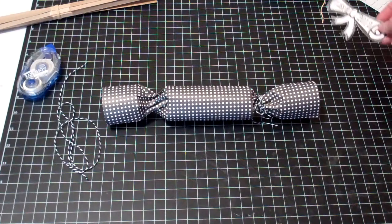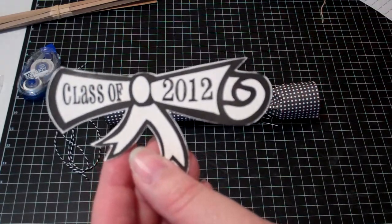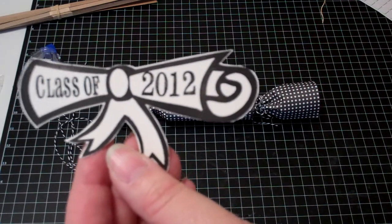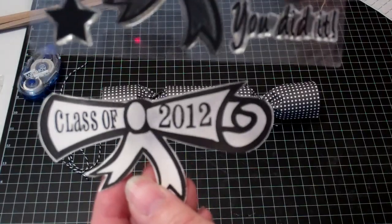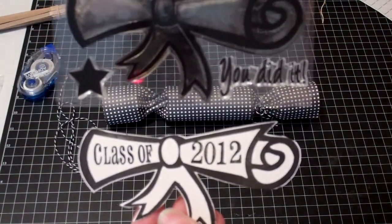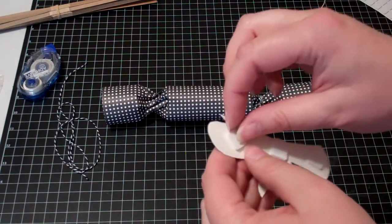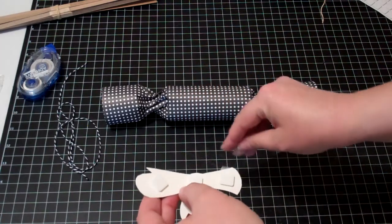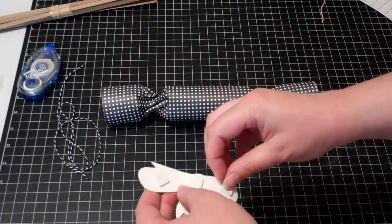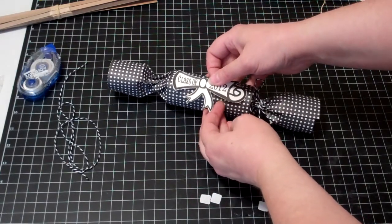What we're doing then is we're going to take this fun little stamp from Jillian Vance Design. And what I've done is I've just stamped the scroll from the stamp set onto just some white cardstock and then fussy cut around it. I also stamped Class of 2012 on here. I've just got some pop dots on the back of this. I'm just going to pull those off. And we're just going to adhere this to the front of our tube.